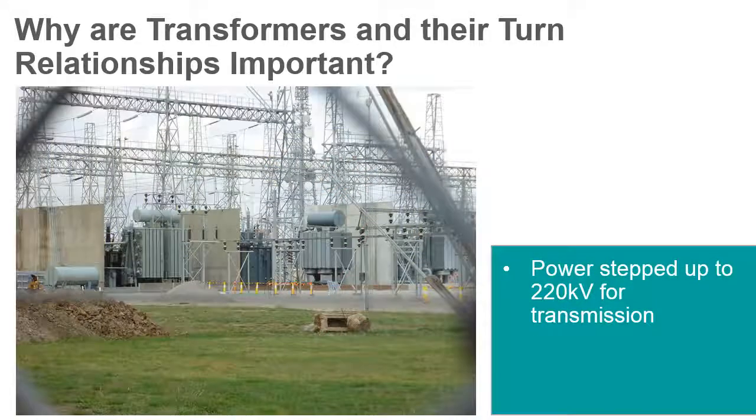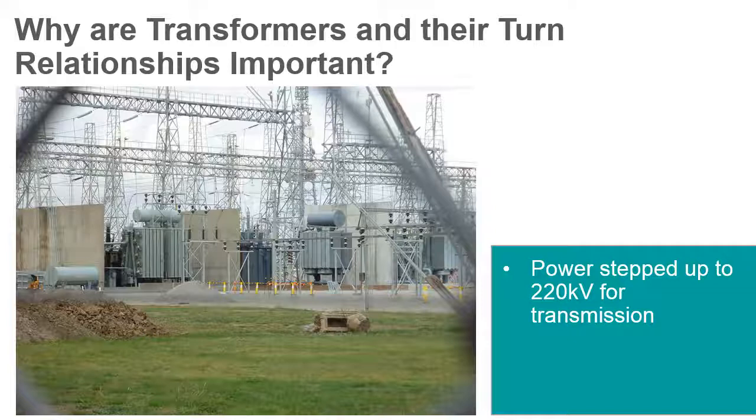Power from the generator has the voltage stepped up to 220 kilovolts or more before being transmitted on high-tension lines. This increase in voltage lowers the current and that allows practical wire sizes and reduces the power loss due to line resistance.